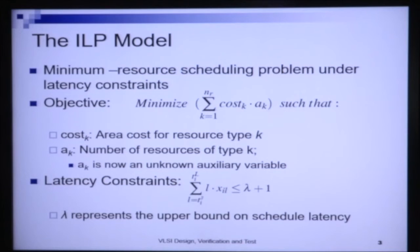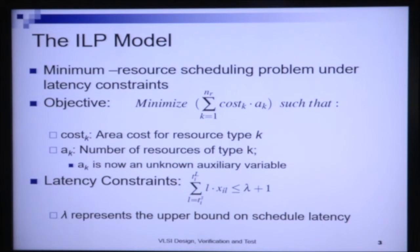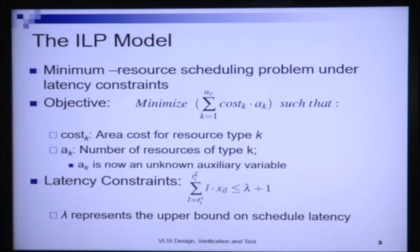I want to minimize the area consumed by the circuit given a limit on the time I can use to schedule the operations in my DAG. The objective is: minimize the sum from k=1 to n_r of cost_k times a_k. Here, cost_k is the area cost for resource of type k, and a_k denotes the number of resources of type k. I know before scheduling the area that one instance of each resource type consumes.